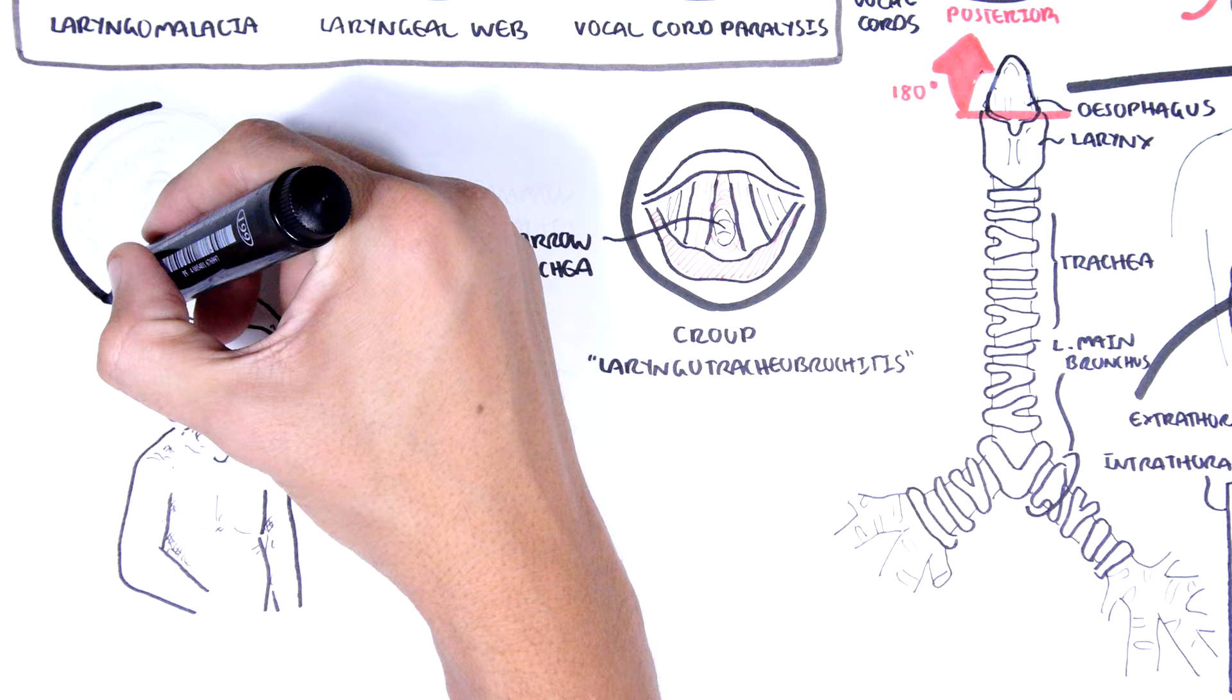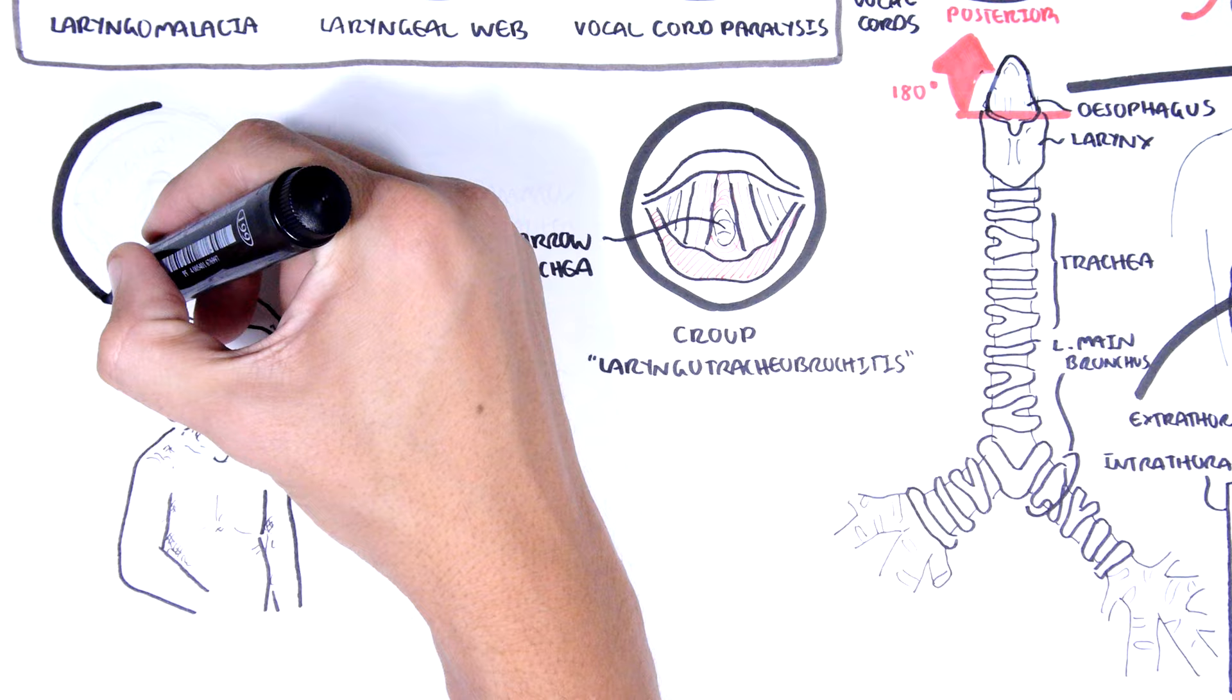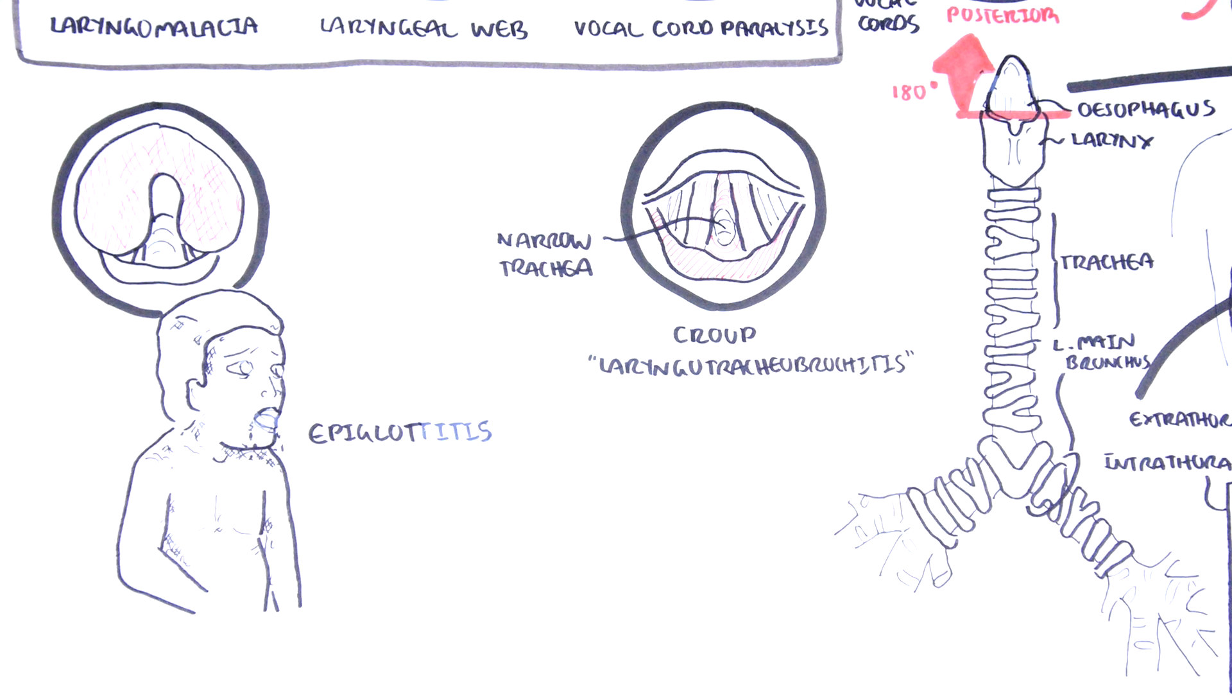Like anaphylaxis, epiglottitis is a medical emergency. Epiglottitis is mainly caused by Haemophilus influenzae type B. Its incidence has decreased thanks to vaccination. Epiglottitis usually occurs in children between the ages of 2 and 7. Infectious epiglottitis may present with a viral prodrome, fever, odynophagia, muffled voice, and drooling.